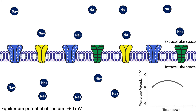Therefore, an EPSP is an excitatory change in the membrane potential of a post-synaptic neuron. A post-synaptic potential is typically brief, with ion channels closing quickly after the stimulus occurs. If there is not another stimulus, the cell will return to the resting membrane potential.